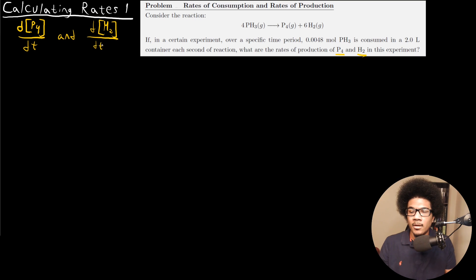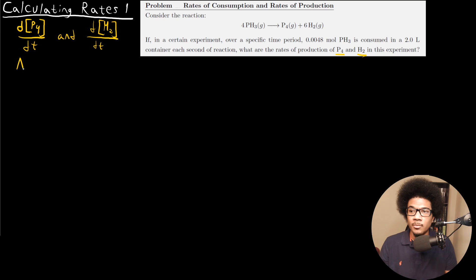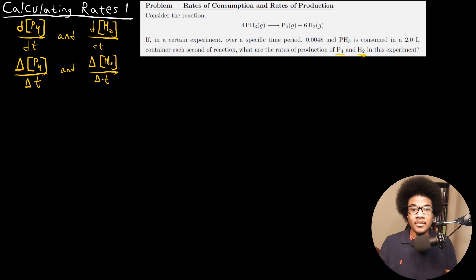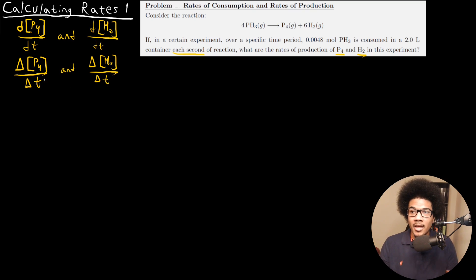Now we're given actual values for the concentration change and the change in time. So I'm going to rewrite these with the big delta — delta concentration of P4 over delta T, and delta concentration of H2 over delta T. Delta T for us is going to be one second, because it's telling us that each second of the reaction we're losing this amount of PH3. So that's giving us our time interval of one second, and we just have to figure out how much phosphorus and H2 is produced during that time.